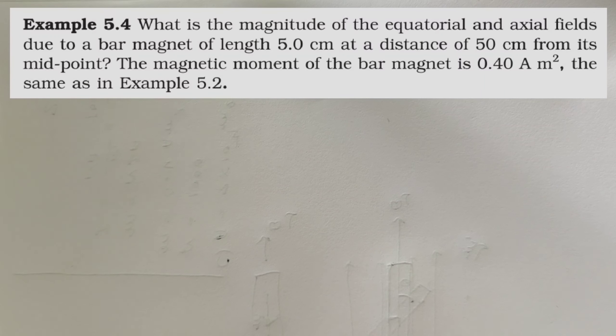Let's see example number 5.4. What is the magnitude of the equatorial and axial fields due to a bar magnet of length 5 cm at a distance 50 cm from its midpoint? The magnetic moment of the bar magnet is 0.4 Am², the same as in example 5.2.